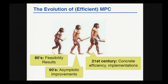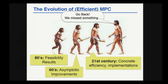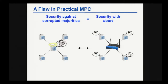In this talk, I would like to discuss an issue which has been somehow missed through this line of development. This has to do with the type of security that we require when we design protocols for dishonest majorities — a majority of corrupted parties.